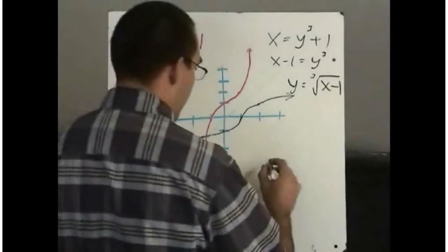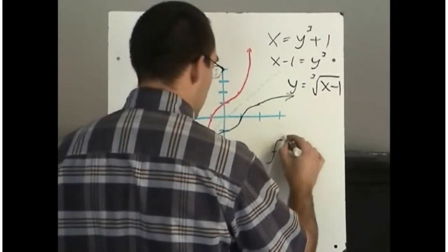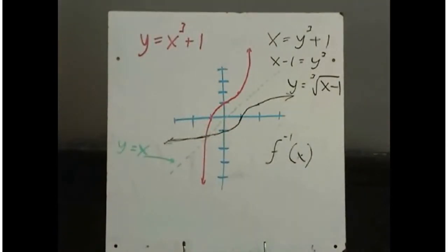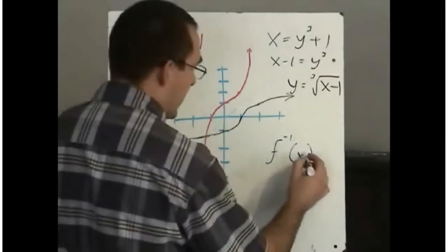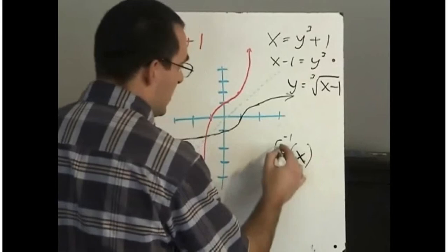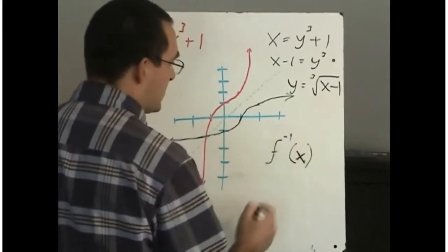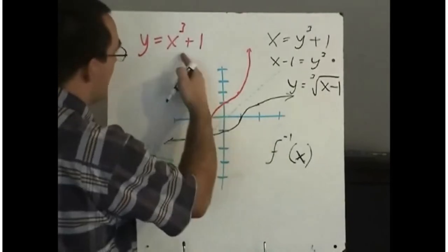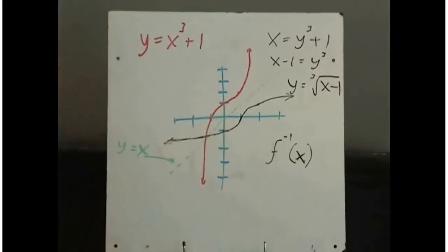Now we have a symbol for the inverse. The inverse of a function is denoted like this: f little minus 1 of x. When you see that, it means this is the inverse function of whatever function that you may have started with.